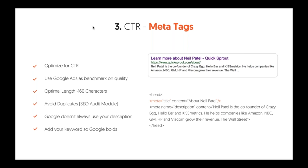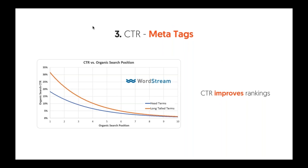With your title tags, a few general rules: the optimal length for your meta description is 160 characters. Avoid duplicate meta descriptions and titles. Google doesn't always use your description, and that's okay. Add your keyword so Google bolds it when someone does a search. If you look at rankings versus CTR, the first spot typically gets around 32-35% CTR. Once you start going down from there, it drastically drops.